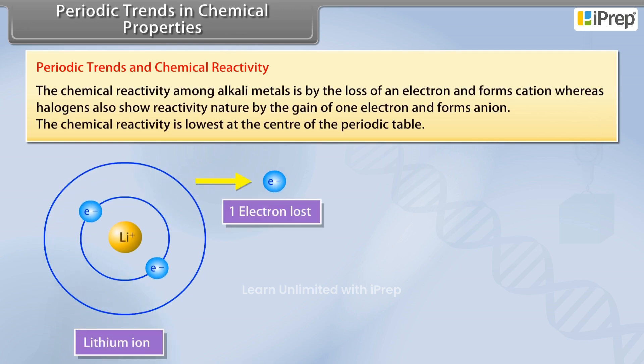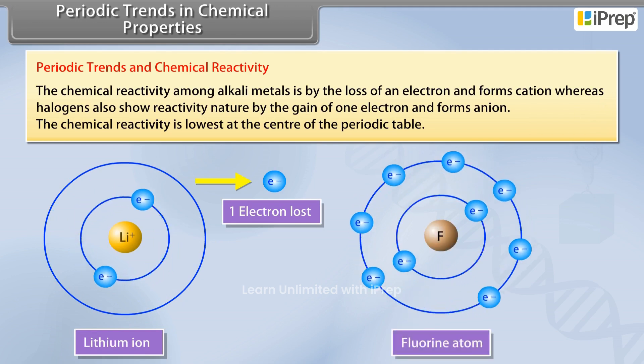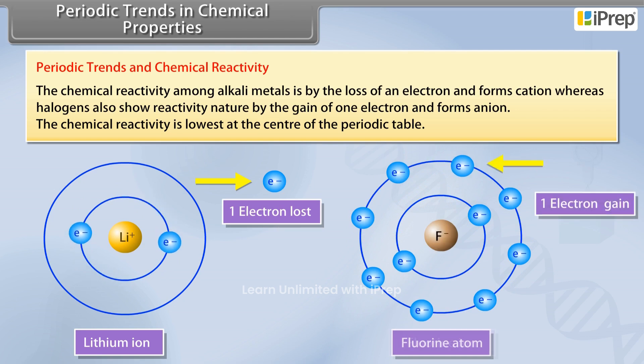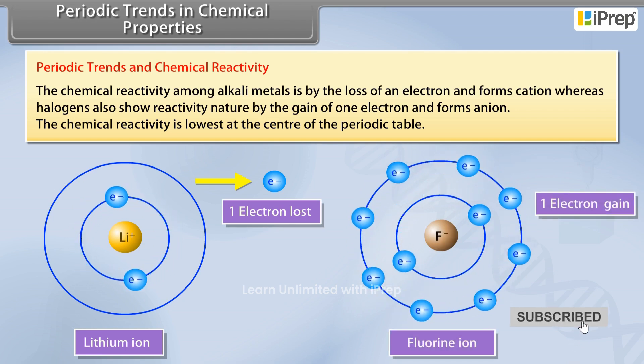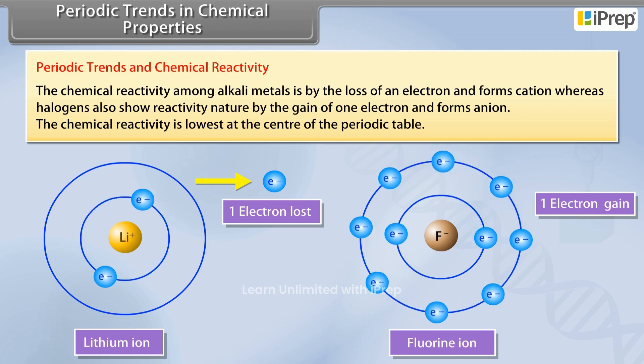Whereas halogens also show reactivity nature by the gain of one electron and form anion. The chemical reactivity is lowest at the center of the periodic table.